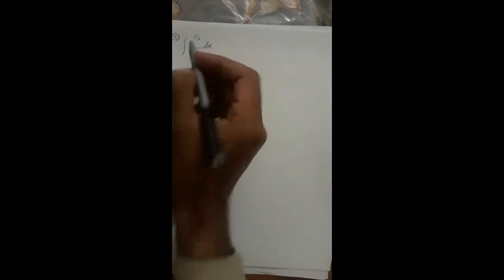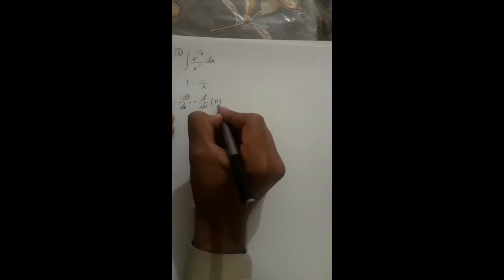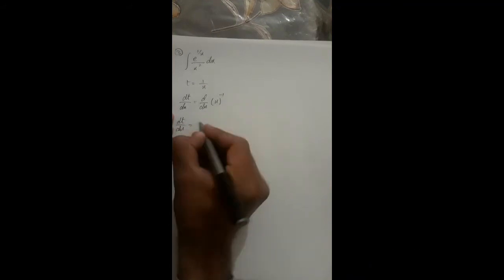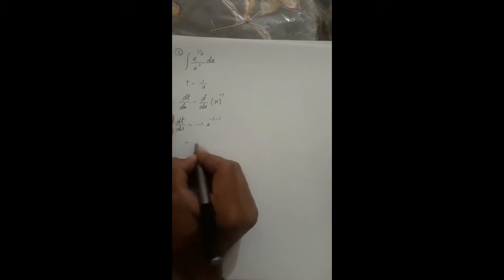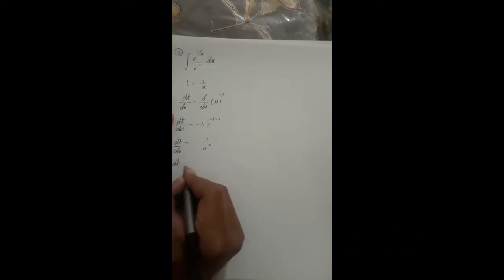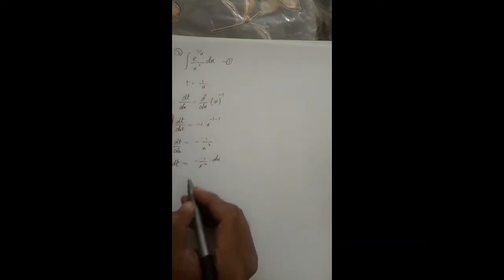Next question: integrate e^(1/x) divided by x squared. Here we put t equal to 1/x. Shifting x to the top, dt/dx equals minus 1 times x to the power (minus 1 minus 1), which is minus 1 over x squared. So dt equals minus (1/x²) dx. We call this equation 1.